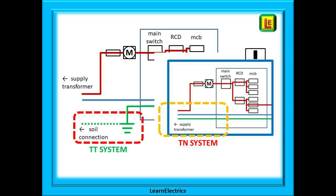We can compare here a TT system and a TN system. The TT system uses the soil as an earth path, as shown in the red box. The much more popular TN system has continuous copper conductors for phase, neutral and earth between the consumer unit and the supply transformer, as shown in the orange box.